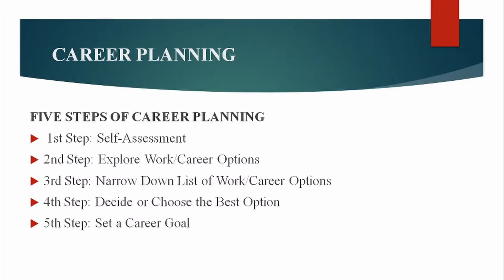The third step is to narrow down the list of work or career options to 3 to 5 career options that match with your interest, personality, needs, values, and skills on the one hand, and the opportunities and limitations on the other. The aim is to choose a manageable set of 4 to 5 options maximum.